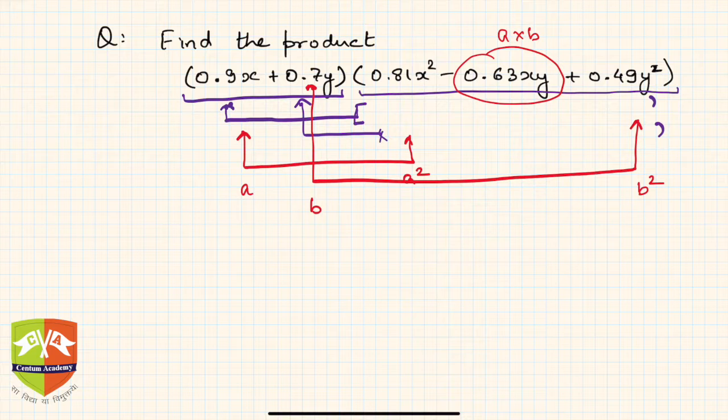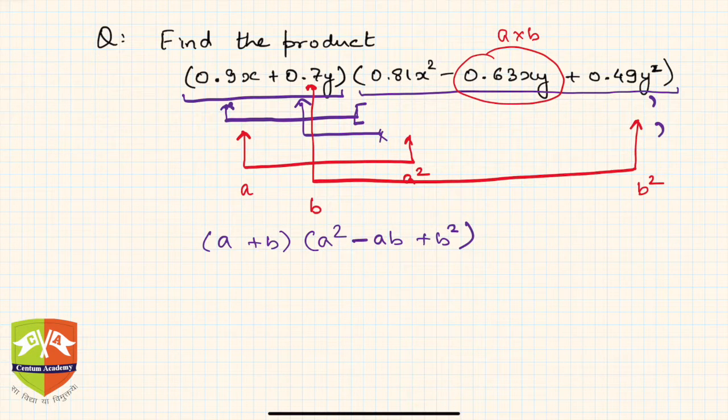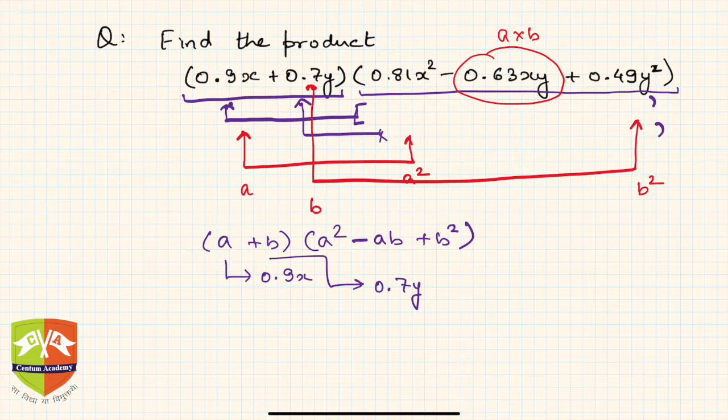That's the observation. And the moment I know this, this particular given expression appears to be like a plus b, and then a square minus ab plus b square, where a represents 0.9x and b represents 0.7y. So the entire expression can be reduced like this.